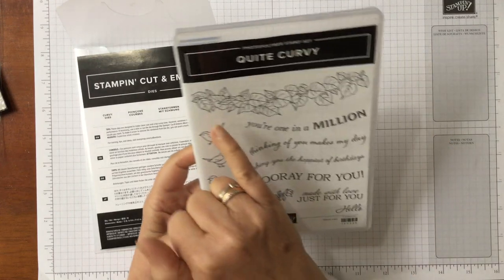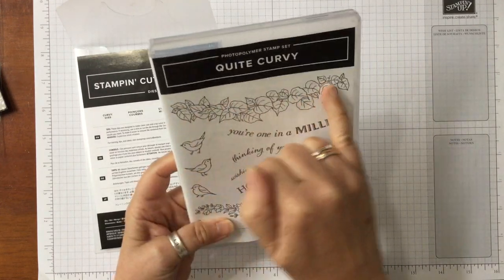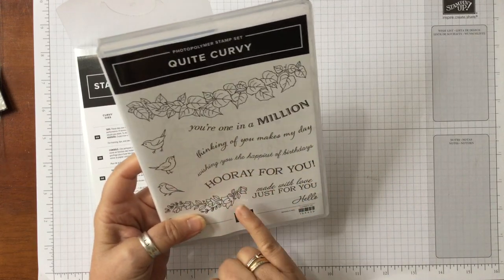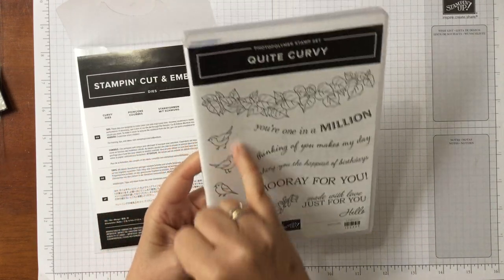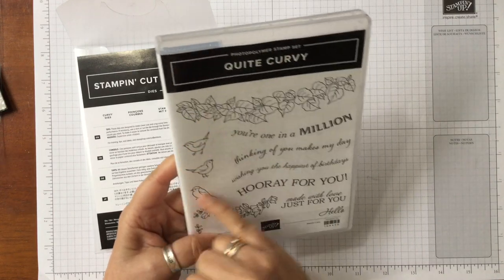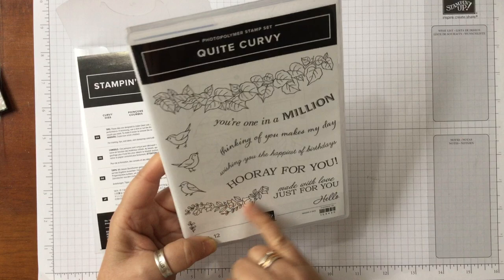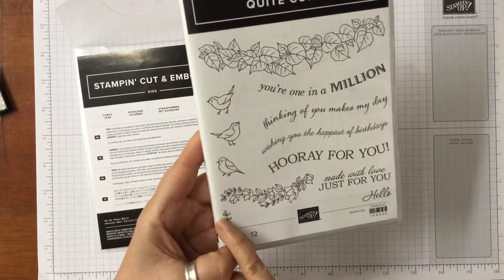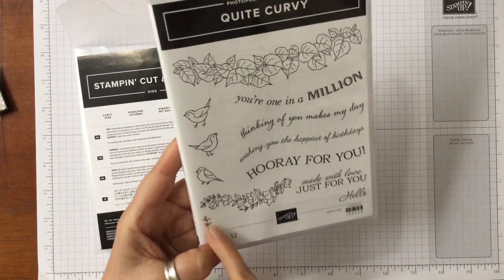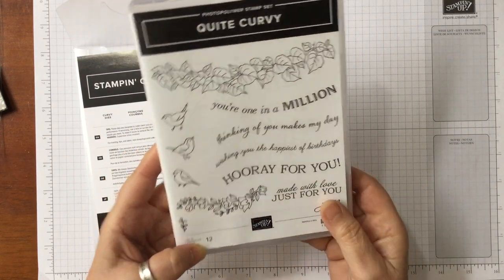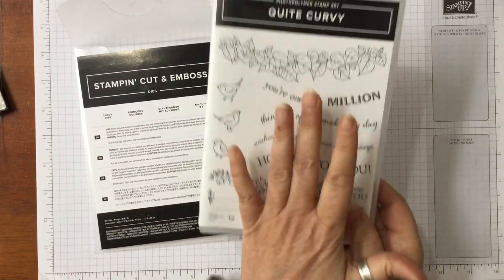The stamp set, you've got these lovely leaves, beautiful curves with your sentiments, little birds that you can make Christmasy as robins or birds for any time of the year, color them in as you want, lovely flower that we had a look at the other day, little tiny weenie little sprig which I haven't used yet, and then there's a little hello at the bottom as well. So really lovely versatile stamp set.